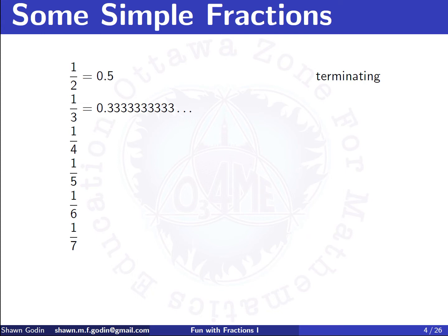If we go to the next one, we get 0.3333333... and that keeps going and going. If you do it on a calculator, you just see the screen full of threes. There are various ways to write this. When I was in school there were two accepted ways: one with a bar over the repeating part, the other using dots over the first and last repeating digit. I kind of like the bar because it's easier to see. This is called a periodic decimal — in this case the period is one, meaning it repeats every one digit.